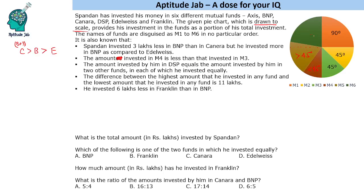This sector is less than 45 degrees, this is greater than 45 degrees, and this one is definitely close to 90 degrees. The only two equal parts we have are these two, so DSP equals an amount equally distributed into two other funds. That means this sector is DSP. We will keep marking the funds as we go.